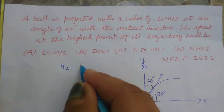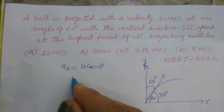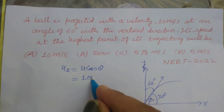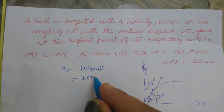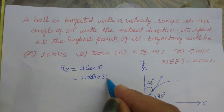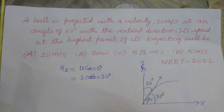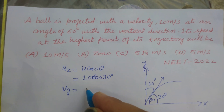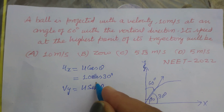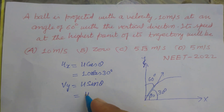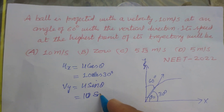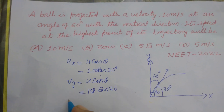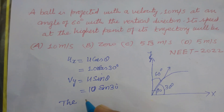The horizontal velocity component is ux = u·cos(theta), where u is 10 meters per second and theta is 30°. The vertical velocity component is vy = u·sin(theta) = 10·sin(30°).